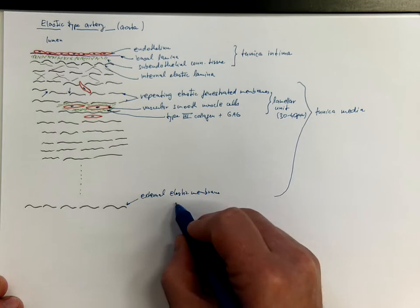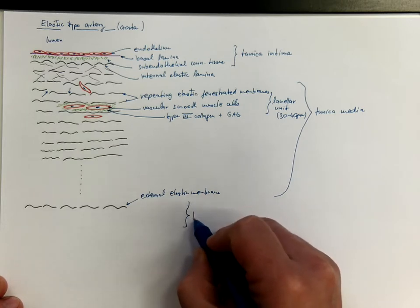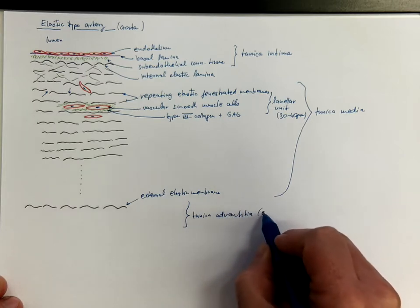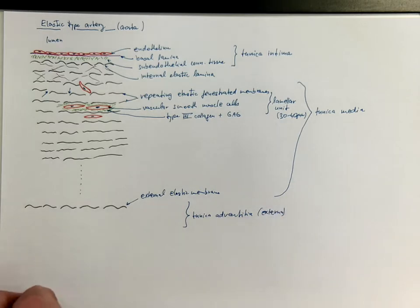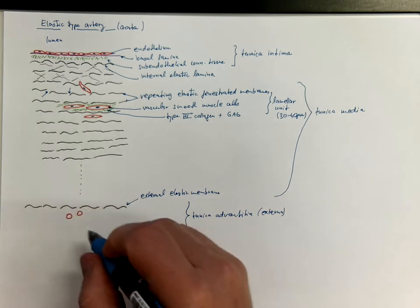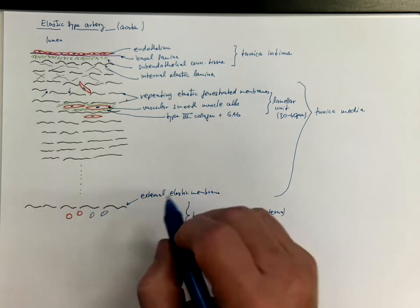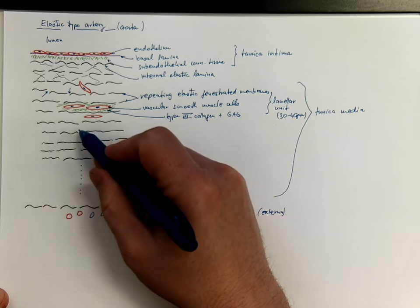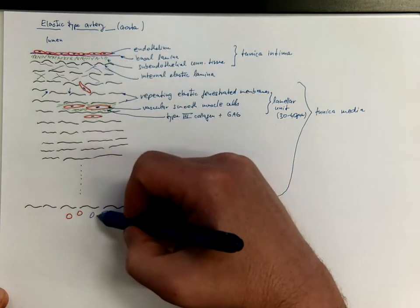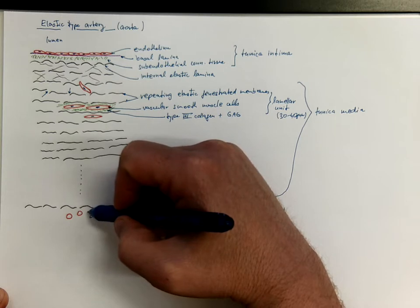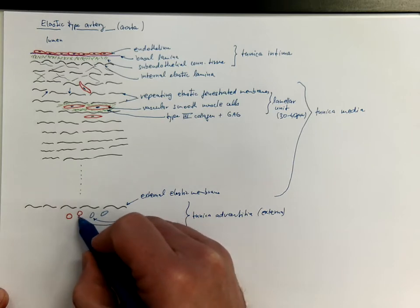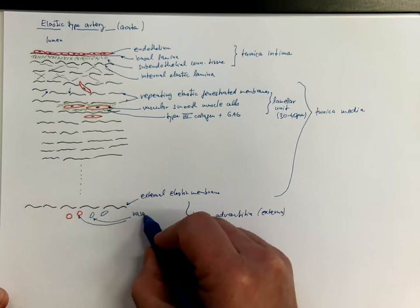The last layer is called the tunica adventitia, or the tunica externa, and it contains blood vessels, arterioles, venules, capillaries, that are responsible for the nutrition of the vascular wall from the outer side. The wall is so thick that the diffusion from the inside would not be sufficient. The majority of the wall receives nutrition from the penetration of these blood vessels, so these are blood vessels of blood vessels, in Latin vasa vasorum.